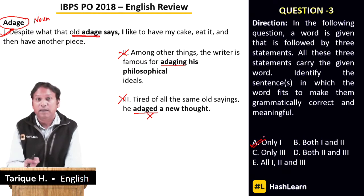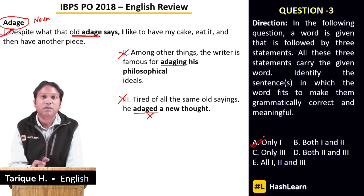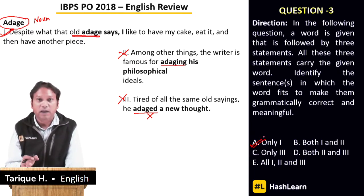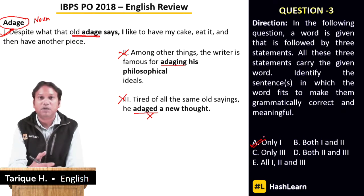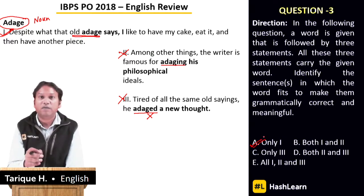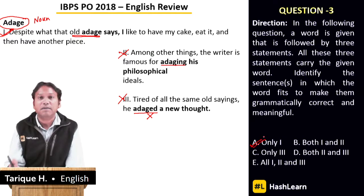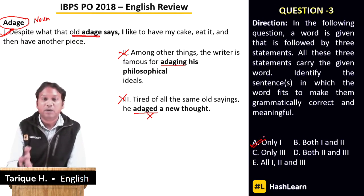The great thing about vocabulary is that if it's strong, you can solve those questions very quickly. A person with decent vocabulary can solve each question in approximately 15–20 seconds. Thirteen questions in about four to five minutes — leaving you 16 minutes to tackle grammar, paragraph jumbles, and even one or two reading comprehension passages.